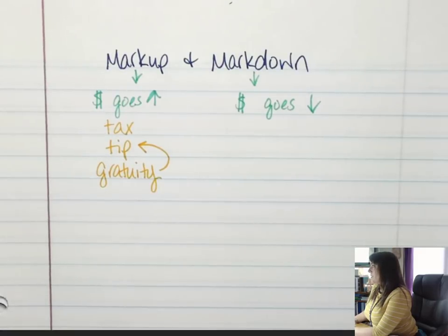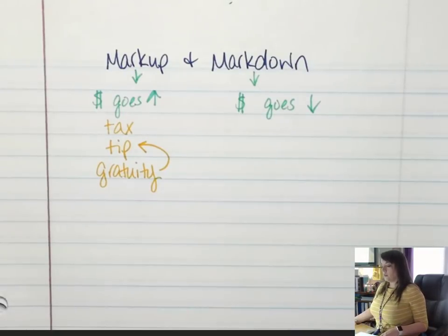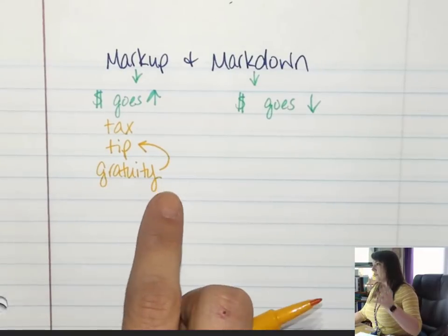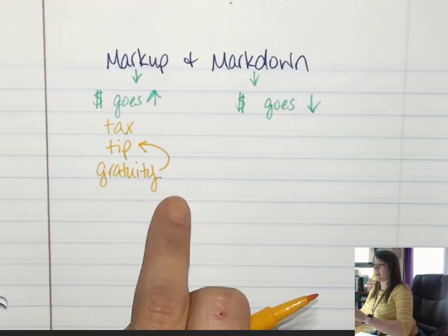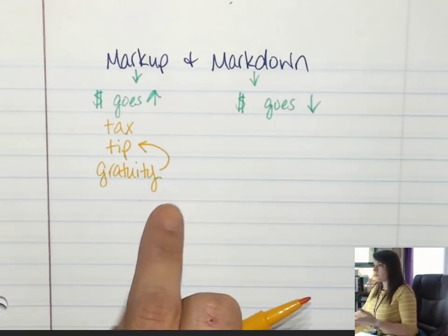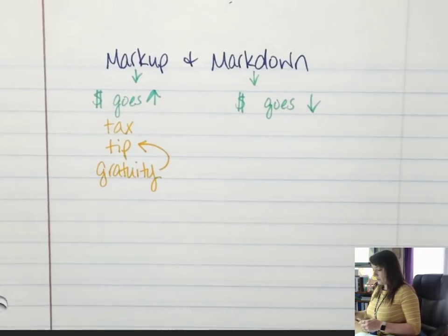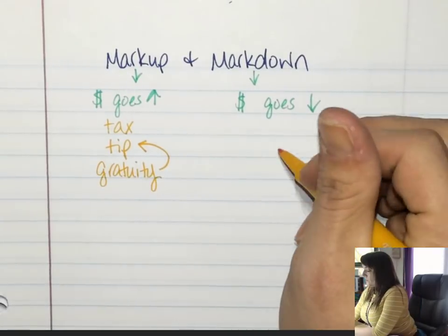The gratuity is sometimes automatically added when you have parties of more than five. Like when you go to Papa's, it'll say at the bottom of your receipt 'gratuity of 15% is automatically added to parties of eight or more.' It's because it takes more people to help those big parties, so they automatically add gratuity.